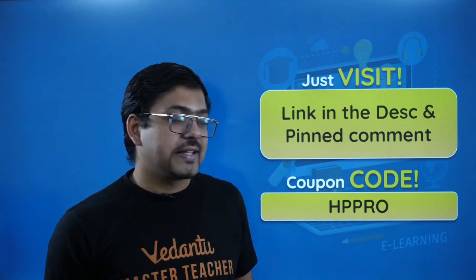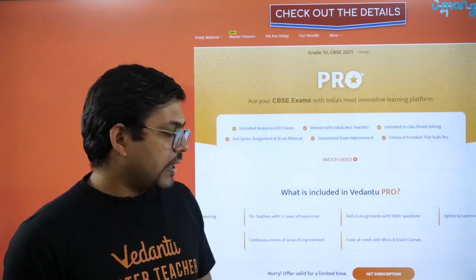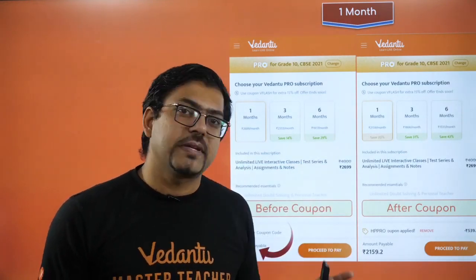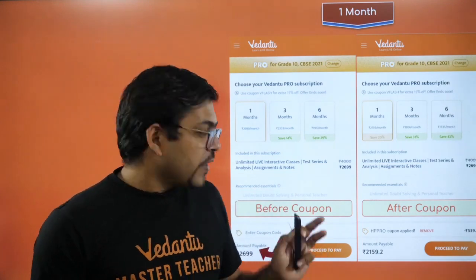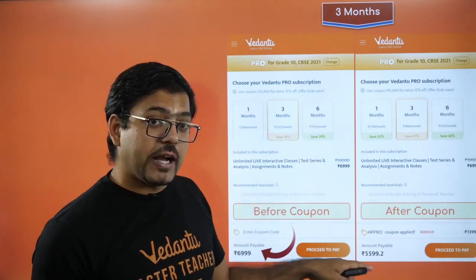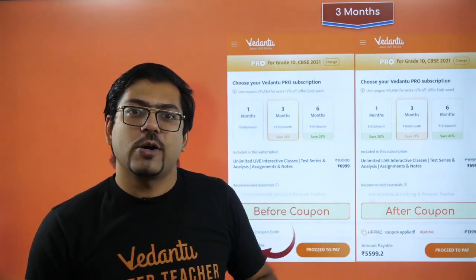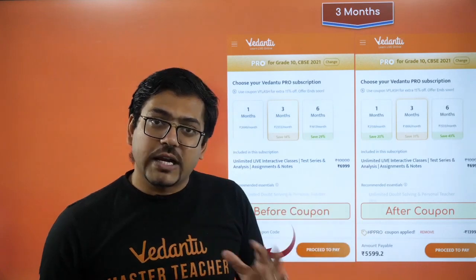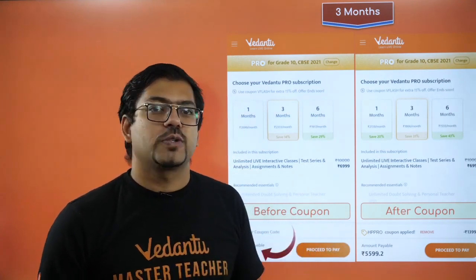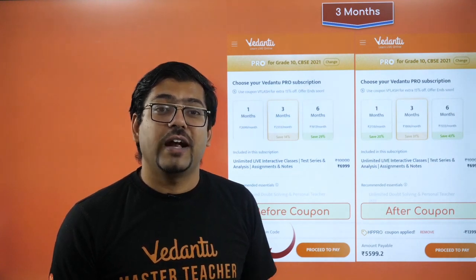As you click the link, you will see a page where you select your class and board. Then click on 'Get Subscription.' You will see subscription options: one month, three months, or six months — whatever you like. Use coupon code HP Pro for a discounted price. Check the coupon code to see exactly how much discount you are getting. Check the discount and check the course before purchasing.